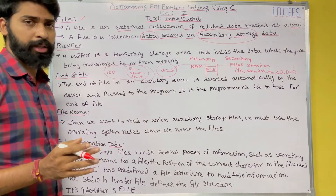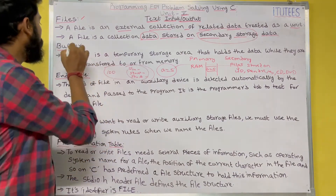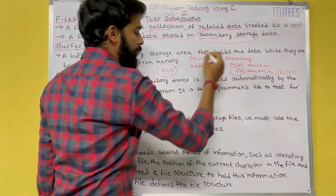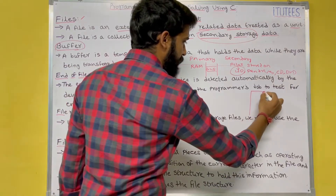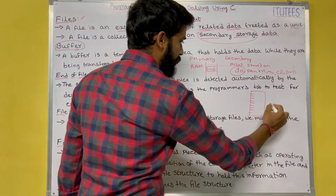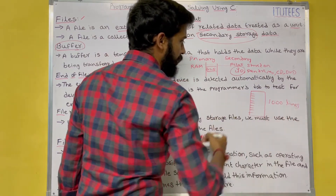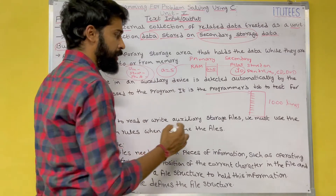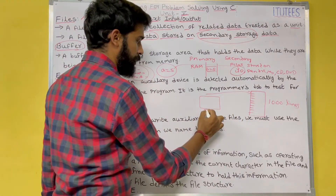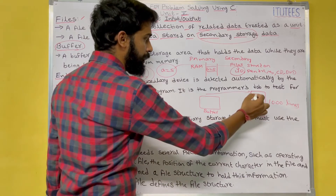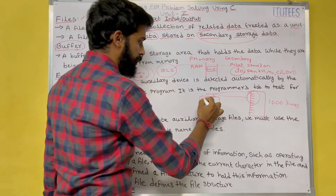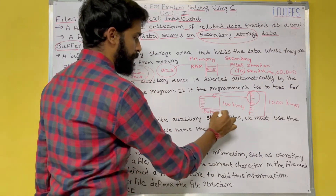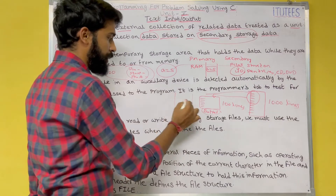What is a buffer? If I want to retrieve data from the hard disk, for example this file contains a thousand lines, now our program wants to retrieve data from this file. There is a memory area called a buffer — it takes some of the data and places it into the buffer, for example the first hundred lines. This is called a buffer.